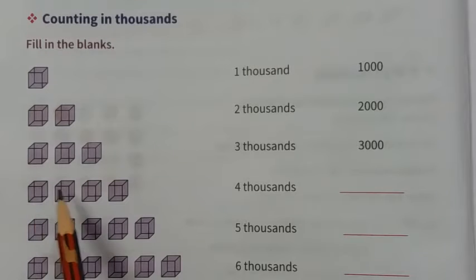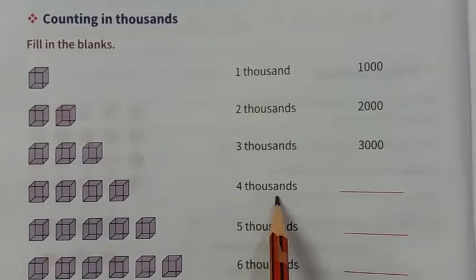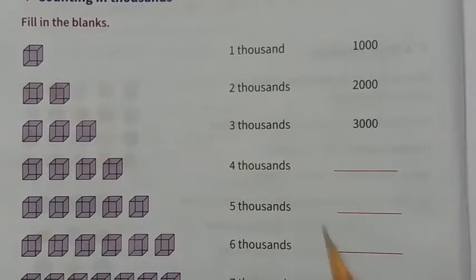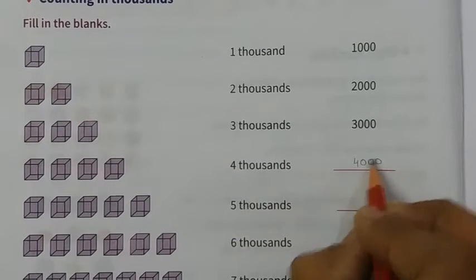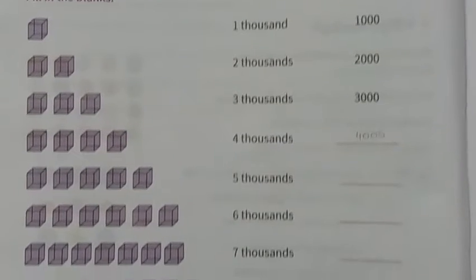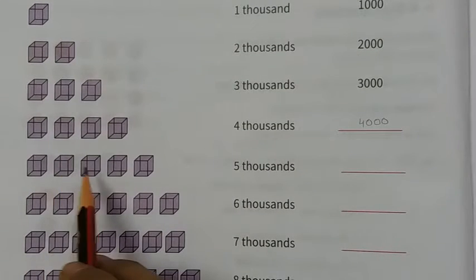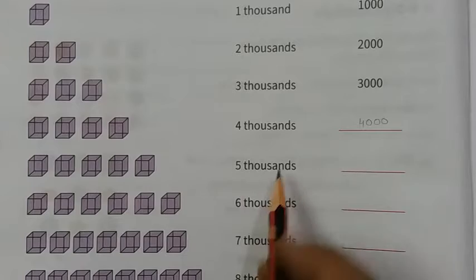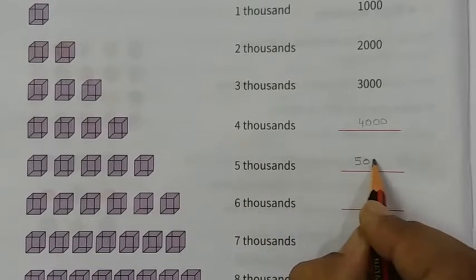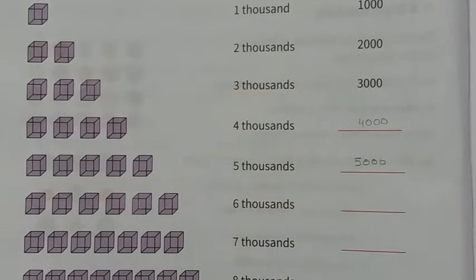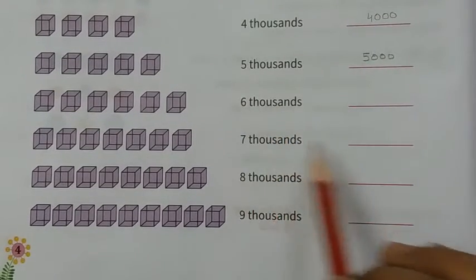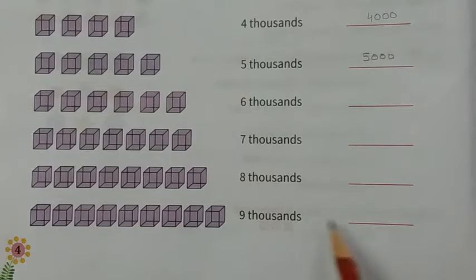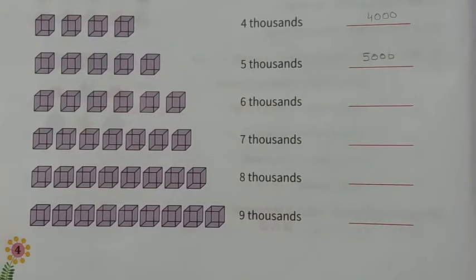Now look in the figure, 1, 2, 3, 4 equals 4000. How do we write 4000? Next, 1, 2, 3, 4, 5 equals 5000. You can write here 5000. Same as you can solve, you can write 6000, 7000, 8000 and 9000.